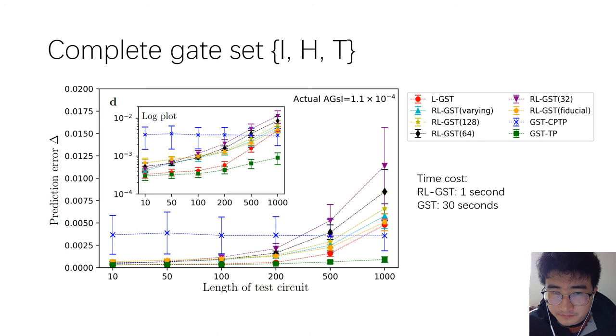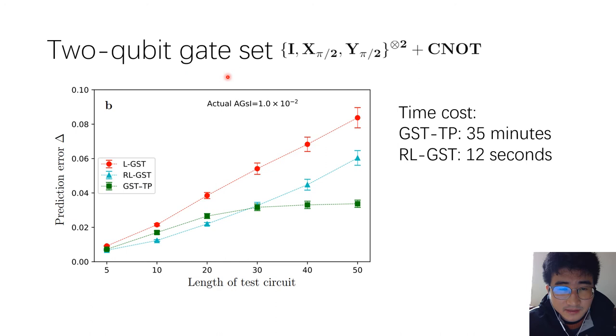The last simulated example is the two-qubit gate set. Here, the performance of our method is still close to the performance of GST. The prediction errors differ more only for longer circuits. This is a direct consequence of our linear approximation.